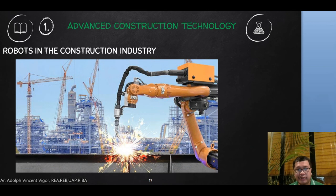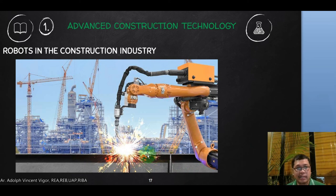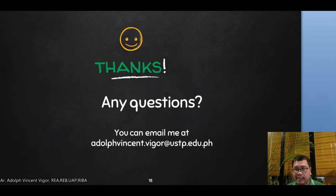Here is an example of robots used in the construction industry — a robot welding steel. The advantage is that a computer can analyze and monitor the quality of the work being performed.